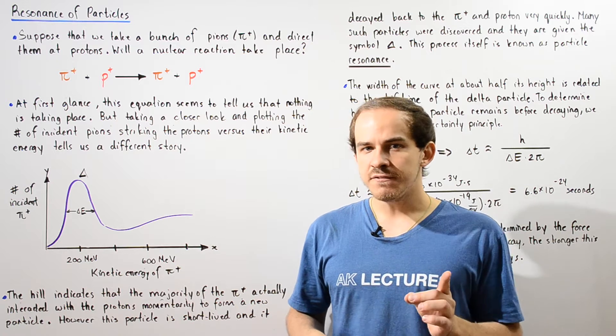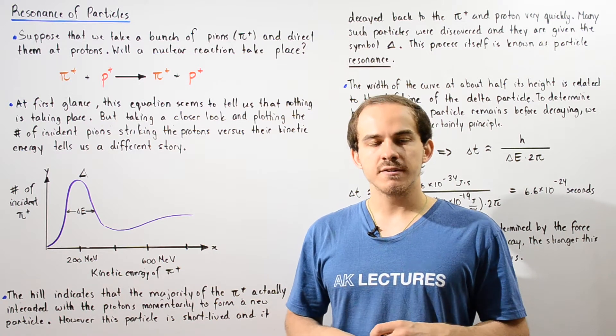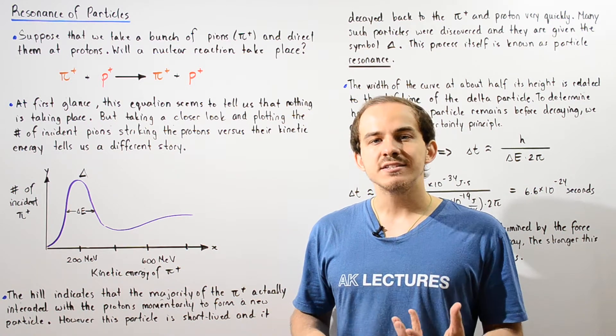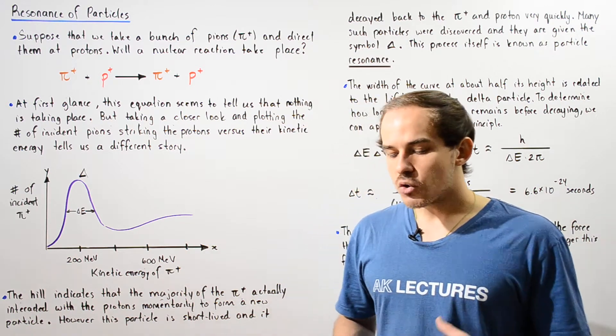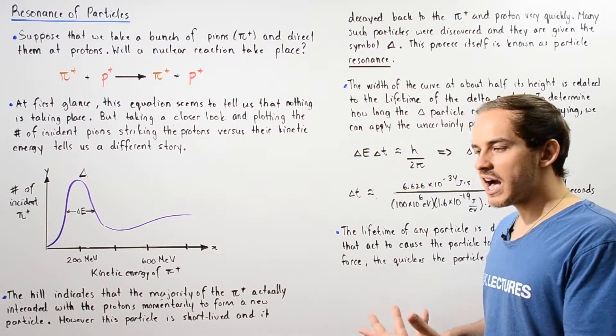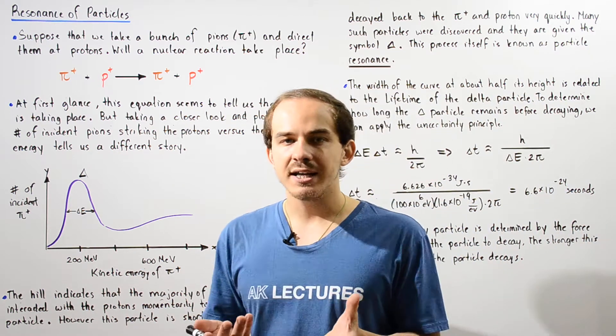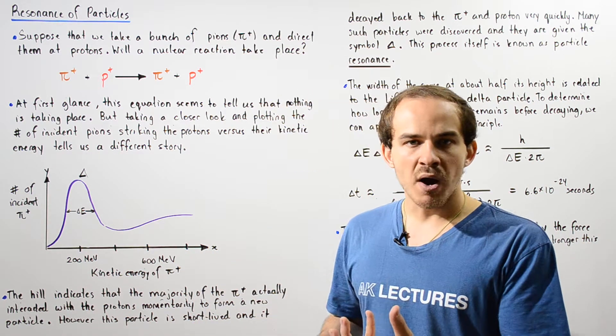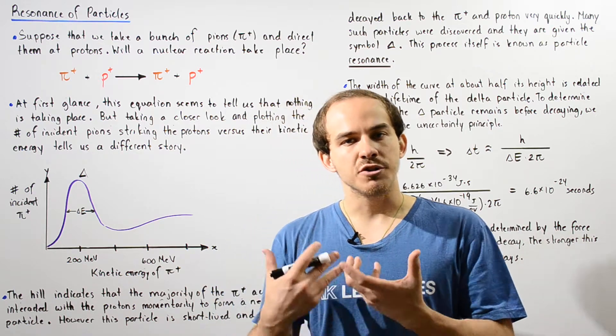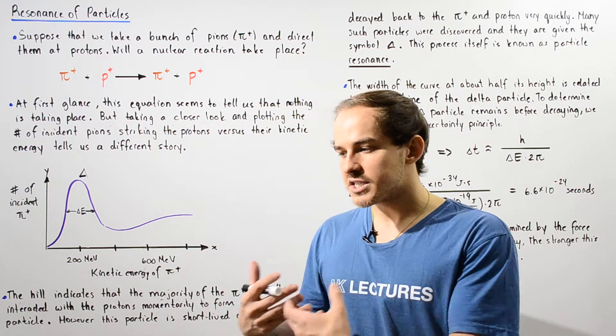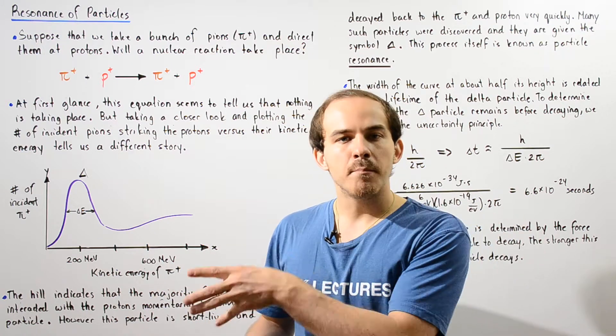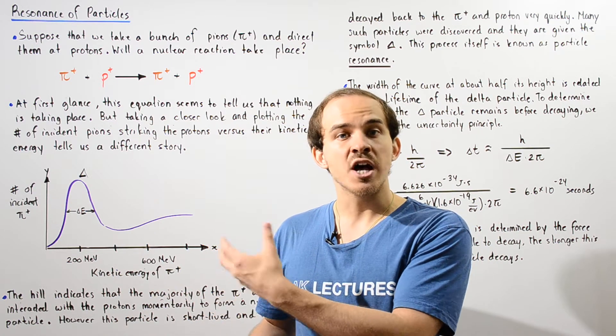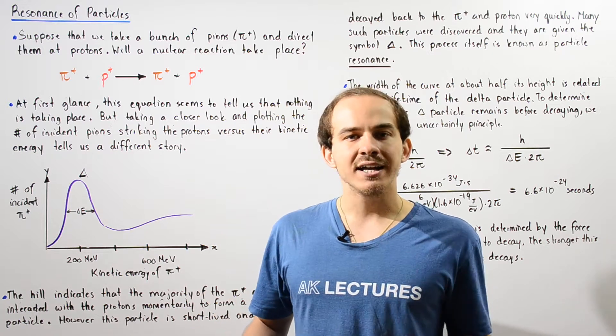Now let's discuss briefly a concept in particle physics known as resonance of particles, or simply resonance. Let's suppose we take some type of particle, let's say the pion, and we allow those pions to interact with protons. So we have some type of proton source, let's say hydrogen atoms, and we bombard those protons, those hydrogen atoms, with pions.